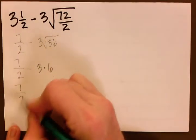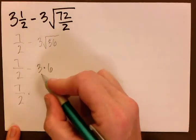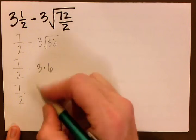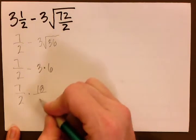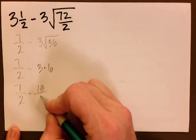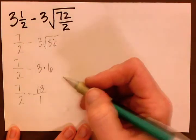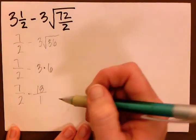7 halves once again stays the same. And 3 times 6 is 18. I'm going to go ahead and just make this a fraction since we're working with fractions. This is subtract. So that's going to be 18 over 1. 7 halves minus 18 over 1.